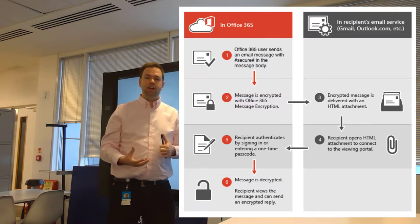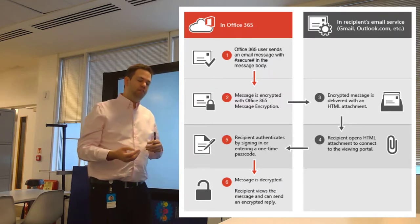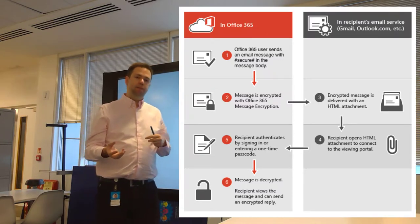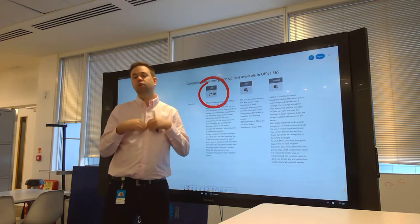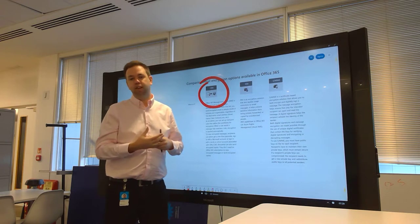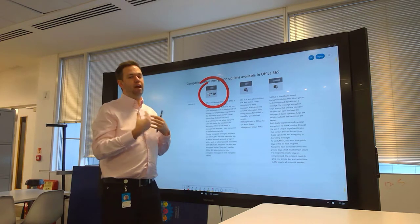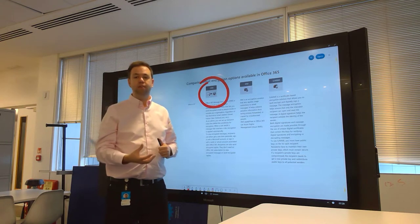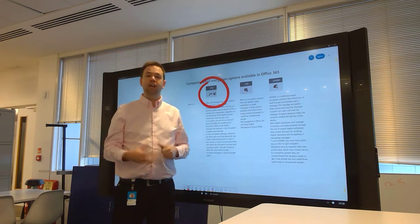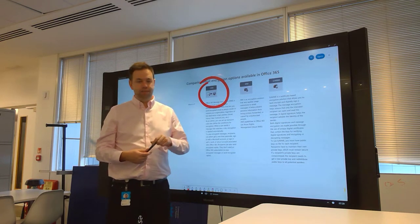So say you're sending an email to Gmail, for example. What happens is when that recipient gets the email, they're asked to authenticate themselves and then they're given access to a secure portal where they're able to read the message and the attachment as well.